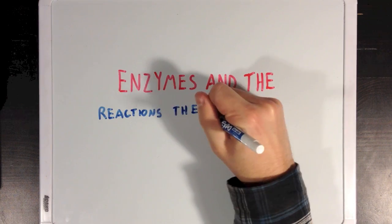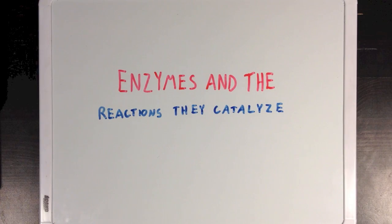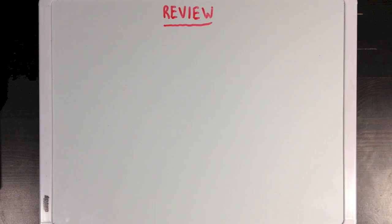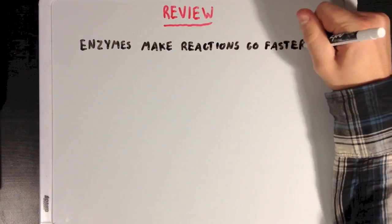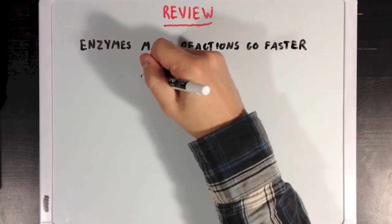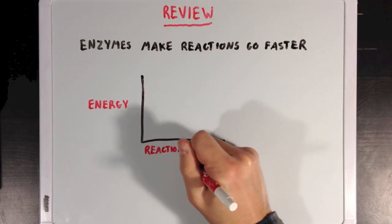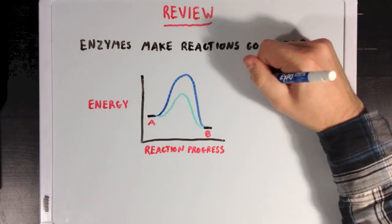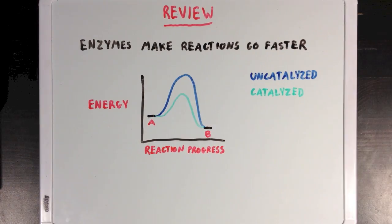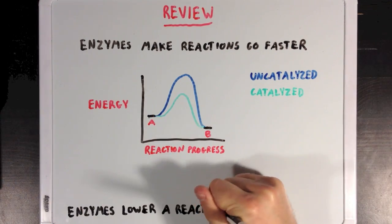Today we're going to talk about enzymes and all the different kinds of reactions that enzymes can catalyze. But before we do that, let's review the idea that enzymes make biochemical reactions go faster. If you look at a reaction coordinate diagram, you'd notice that enzymes speed up reactions by lowering their activation energy.